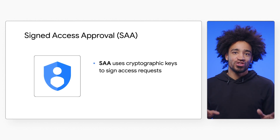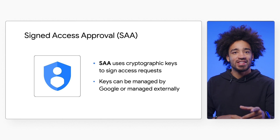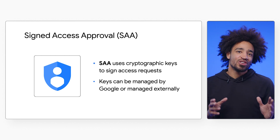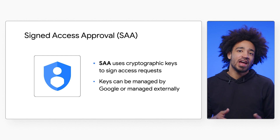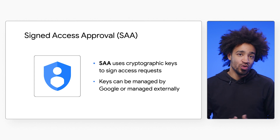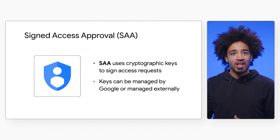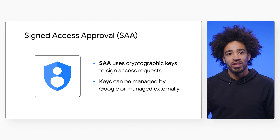The final sovereignty control is Signed Access Approval, or SAA. This control uses the cryptographic signature of your externally managed keys to sign access requests that you approve, which verifies the integrity of the access approval that allows access to your data.